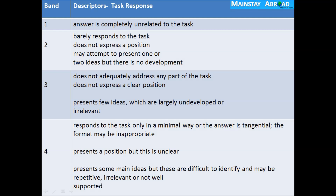The attractive part of this video is the band descriptors. Task Response, Coherence and Cohesion, Lexical Resource, and Grammatical Range and Accuracy — these four points are your assessment criteria. Band 1 means a completely unrelated answer to the task. Examiners from every centre are well trained on band descriptors and will only look for these descriptors in your writing.